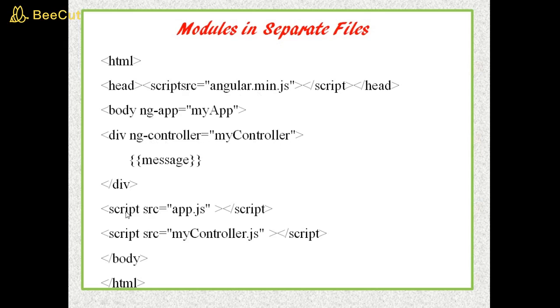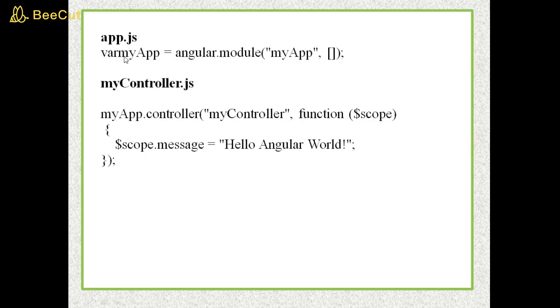See, here I am using three script, one is used for the angular.min.js file, another is app.js file, and third is my controller.js file. See, let's see app.js file. App equal to angular.module, here I am using two parameter. Then second, my controller.js file, myapp.controller, here I am using two parameter, my controller, controller directive name, next function, $scope, $scope.message equal to angular word.